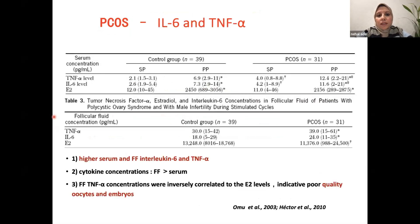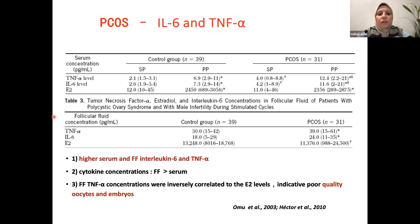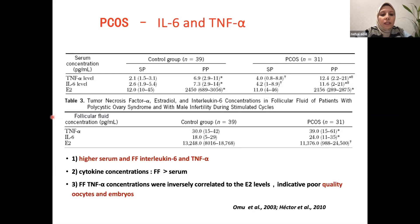Many studies investigate the role of cytokines in follicular fluid and their role in the pathology of PCOS patients. One study compared the concentration of interleukin-6 (IL-6) and tumor necrosis factor alpha (TNF-α) between PCOS patients and a control group. They found that high levels of IL-6 and TNF-α were found in both serum and follicular fluid of PCOS patients, with concentrations in follicular fluid higher than in serum. The follicular fluid cytokine level is inversely proportional to estradiol level in follicular fluid, and is considered a poor indicator of oocyte and embryo quality.